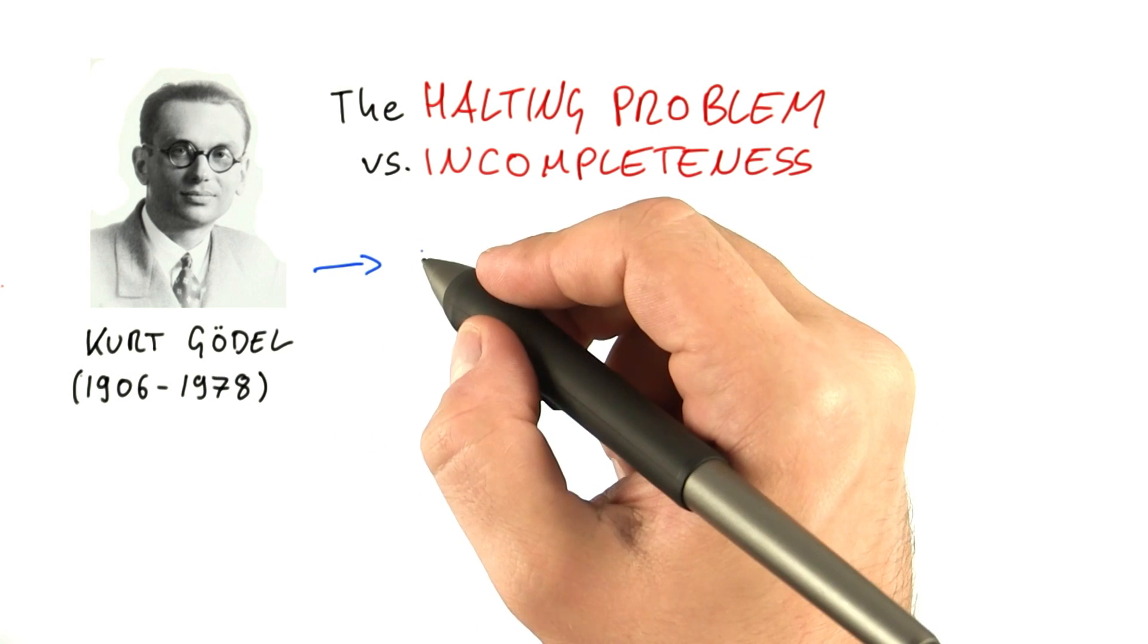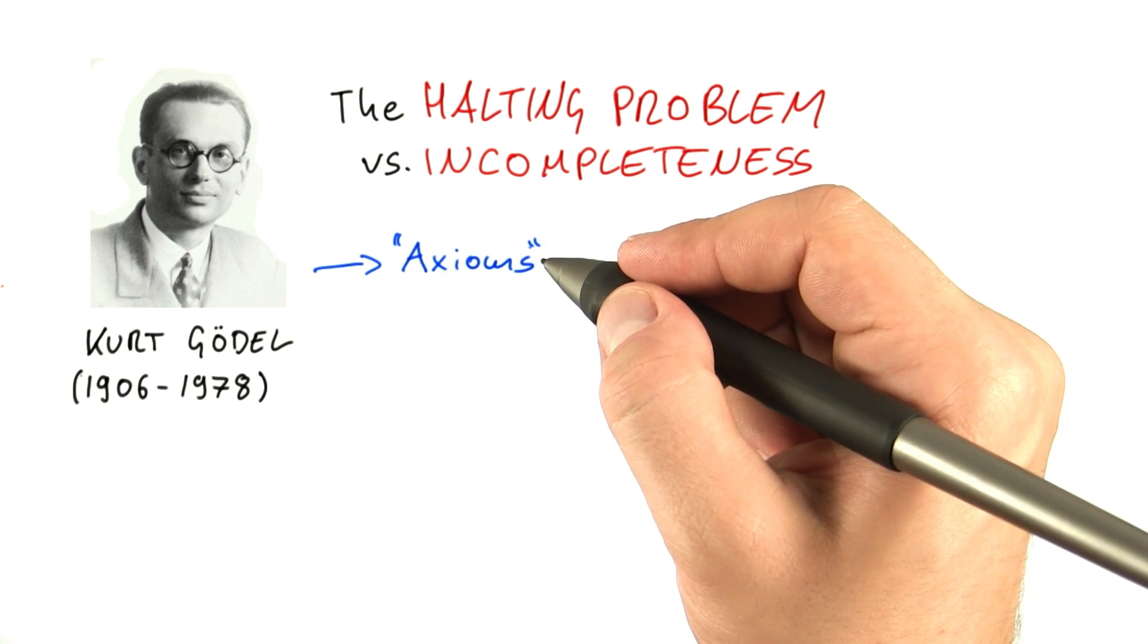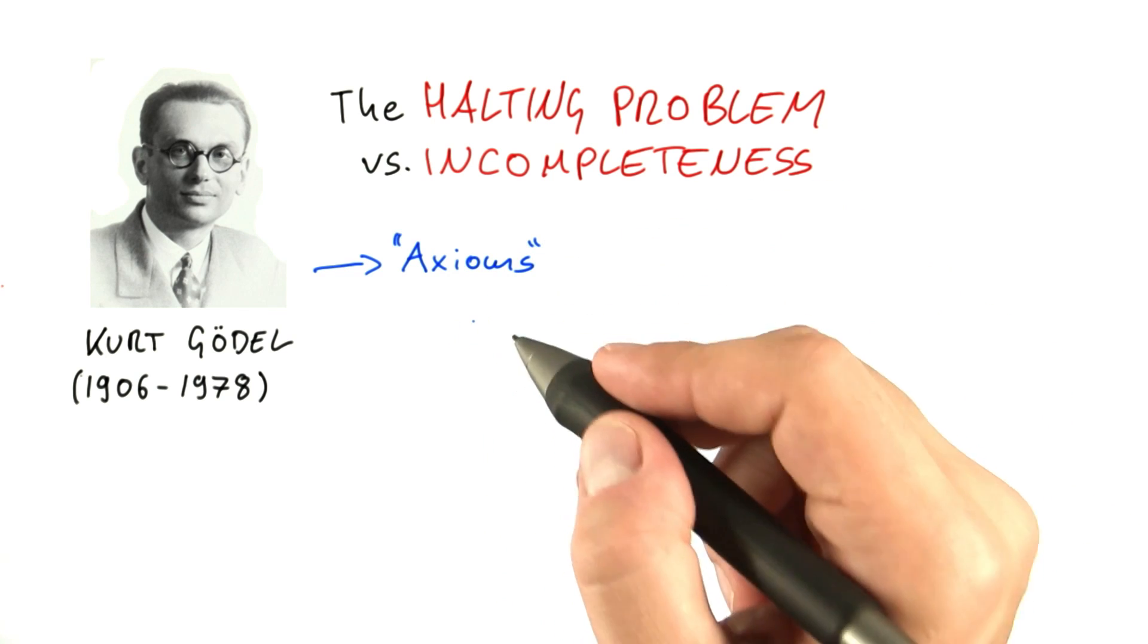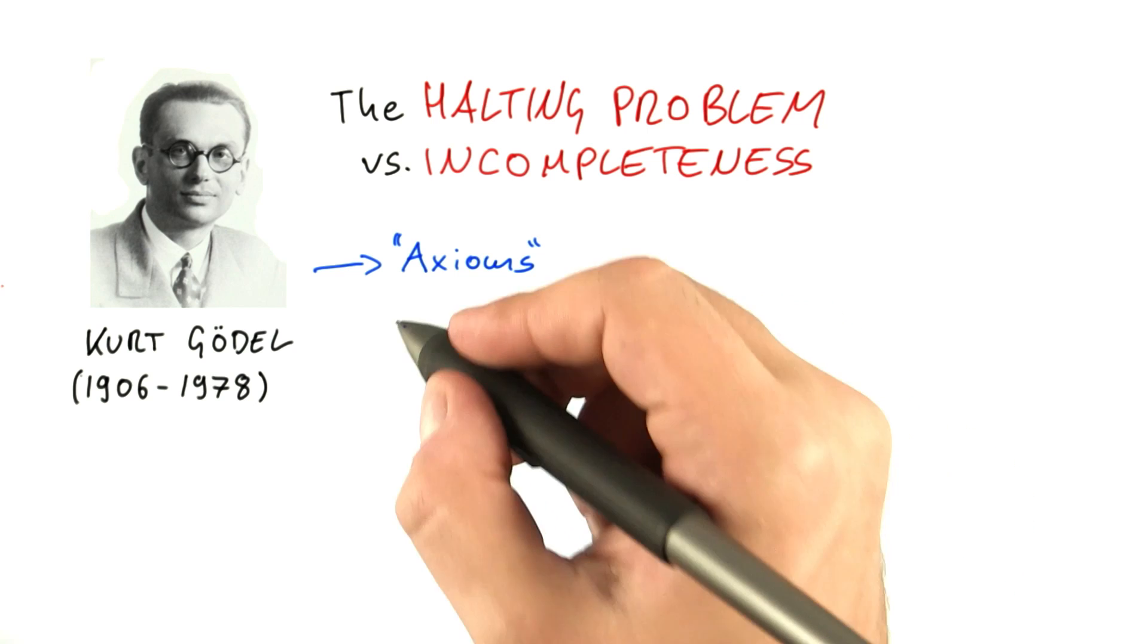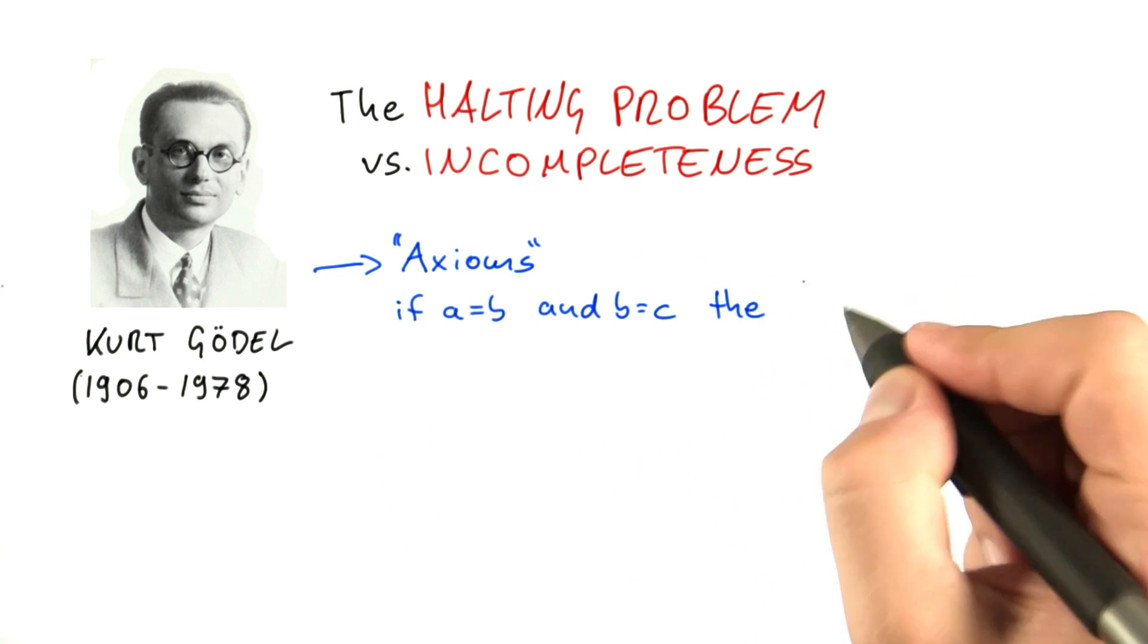Any mathematical system starts out with a set of axioms. What are axioms? Axioms are statements which you assume to be true without having any formal proof for them, such as if a equals b and b equals c, then a must also equal c.